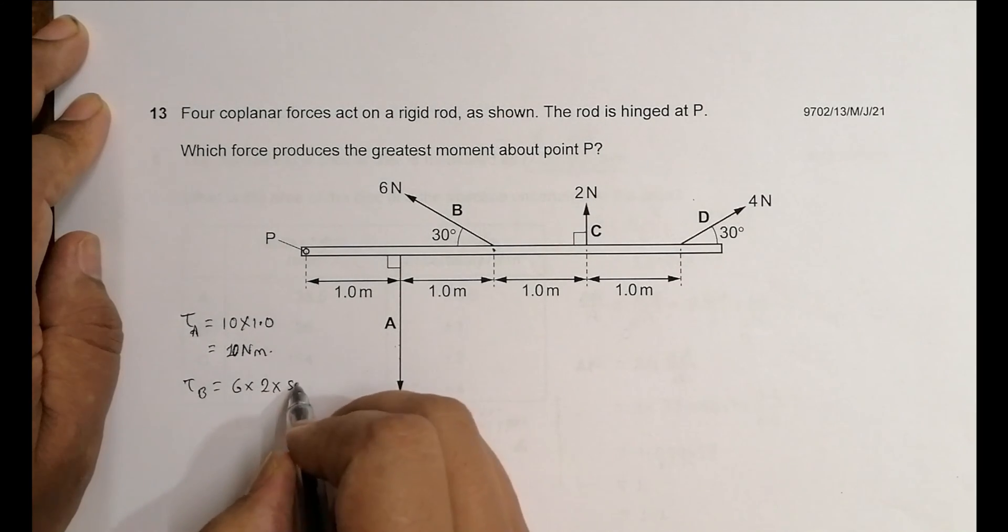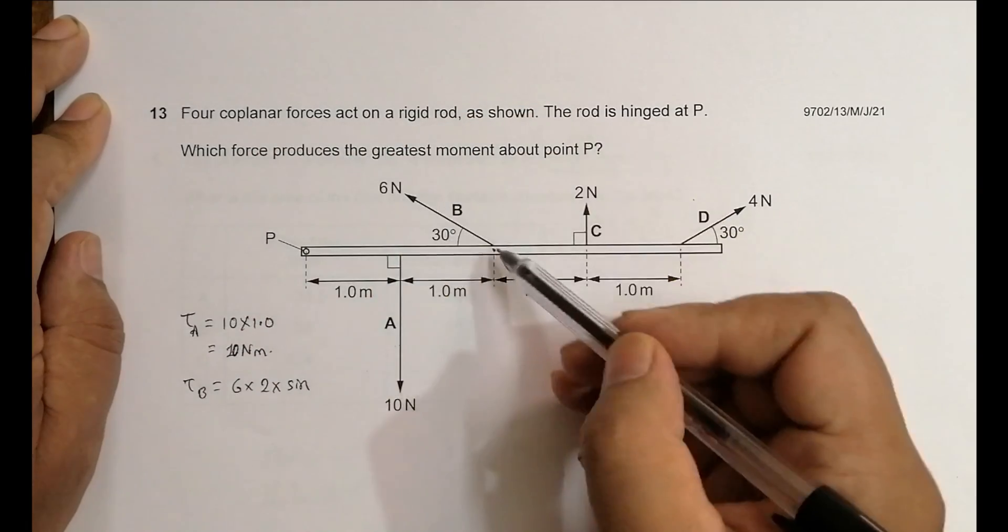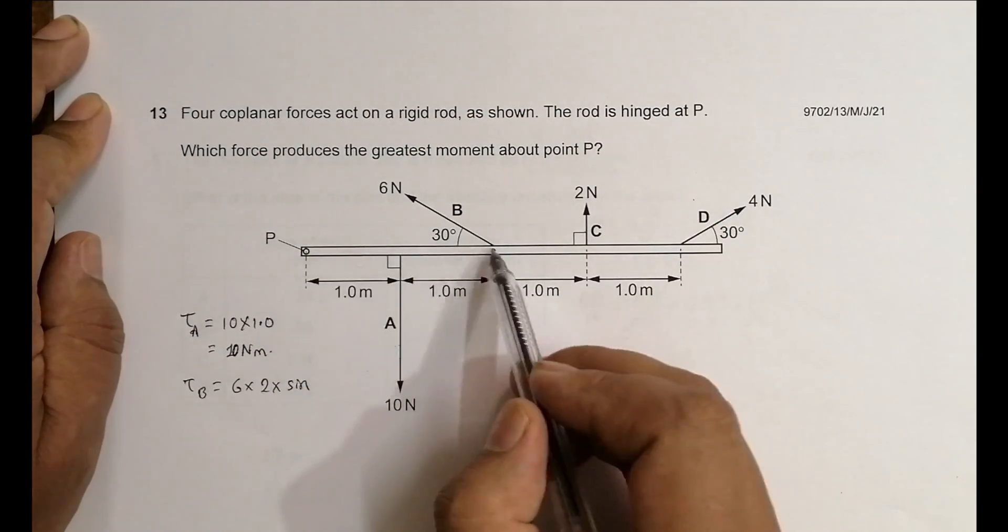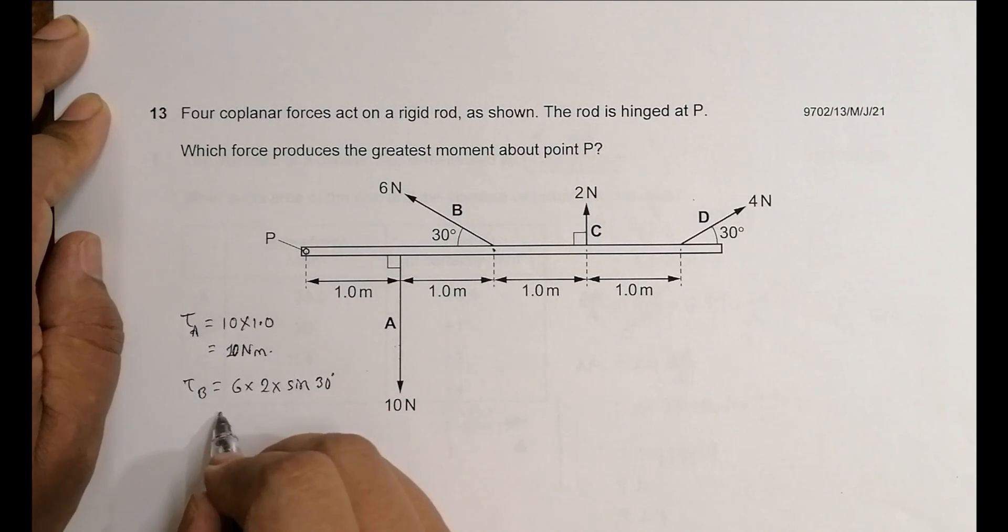So this angle is 30 degrees. It should equal 6 times 2. Sine 30 is 0.5. 12 into 0.5 is 6 newton meters.